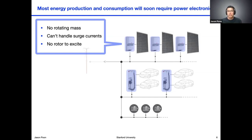These power electronics are quite unique in and of themselves, because unlike synchronous generators, they do not have rotating mass. They also cannot handle very large surge currents — a power converter can only be pushed to about 2x of its rated current before something bad happens. And similarly, there's nothing rotating, so there's no concept of a rotor that can be excited to provide reactive power. These are fundamentally different devices than synchronous generators.